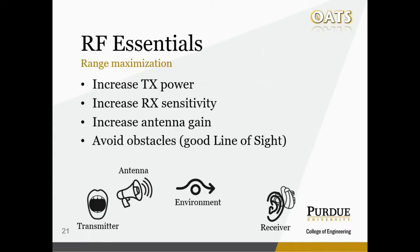In order to maximize the range between the transmitter and the receiver, there are a few things you can do. First, you can increase the transmitter power. Second, you can improve the receiver sensitivity. You can also increase the antenna gain by using a more powerful antenna to amplify the signal you want to send. And you can try to avoid obstacles by pointing your antenna and transmitter in a direction that has a direct line of sight to your receiver.